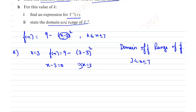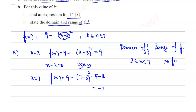Next, we find the range of f. For x = 3, f(x) = 9. For x = 7, f(x) = 9 - (7 - 3)² = 9 - 16 = -7. So the range is -7 ≤ f(x) ≤ 9.